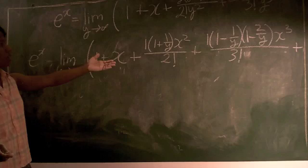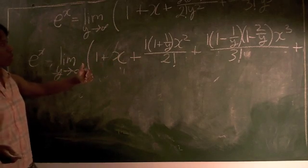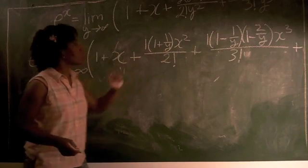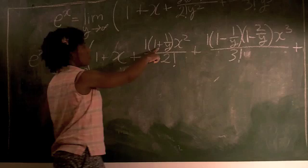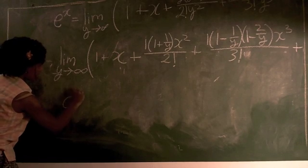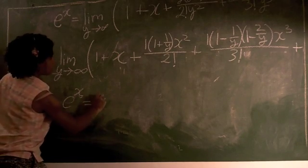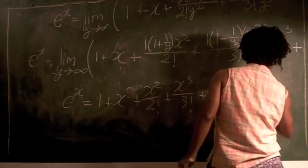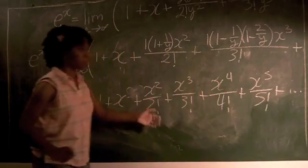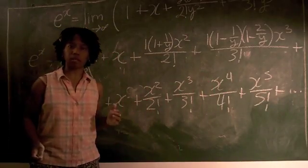So now that I have every expression or every term written in this way, I can say what happens as y goes to infinity. As y goes to infinity, 1 over y goes to 0. So the simplified expression now without the limit is that e to the x is equal to 1 plus x plus x squared over 2 factorial plus x cubed over 3 factorial plus x to the fourth over 4 factorial plus x to the fifth over 5 factorial, and it continues into infinity.